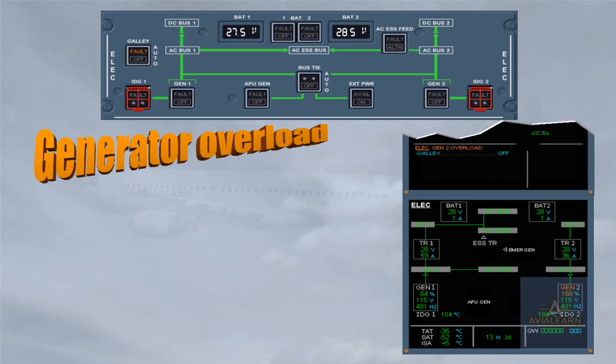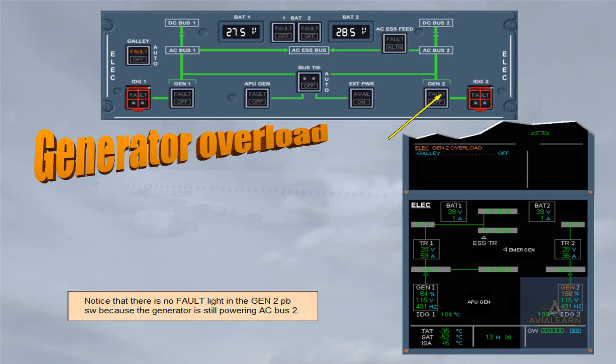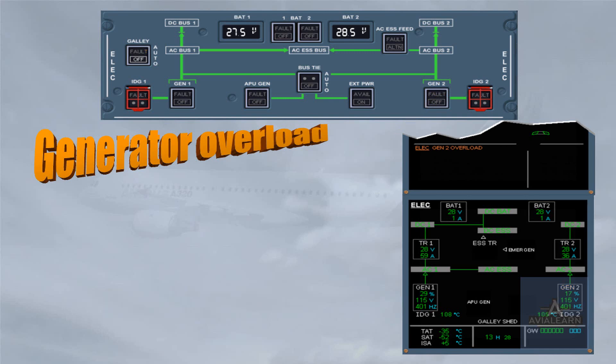Notice that there is no fault light in the generator 2 push-button switch, because the generator is still powering AC bus 2. As required, the galley push-button switch has been switched off. On the ECAM electrical page, the galley shed indication has appeared and the generator 2 load is back to a normal value.